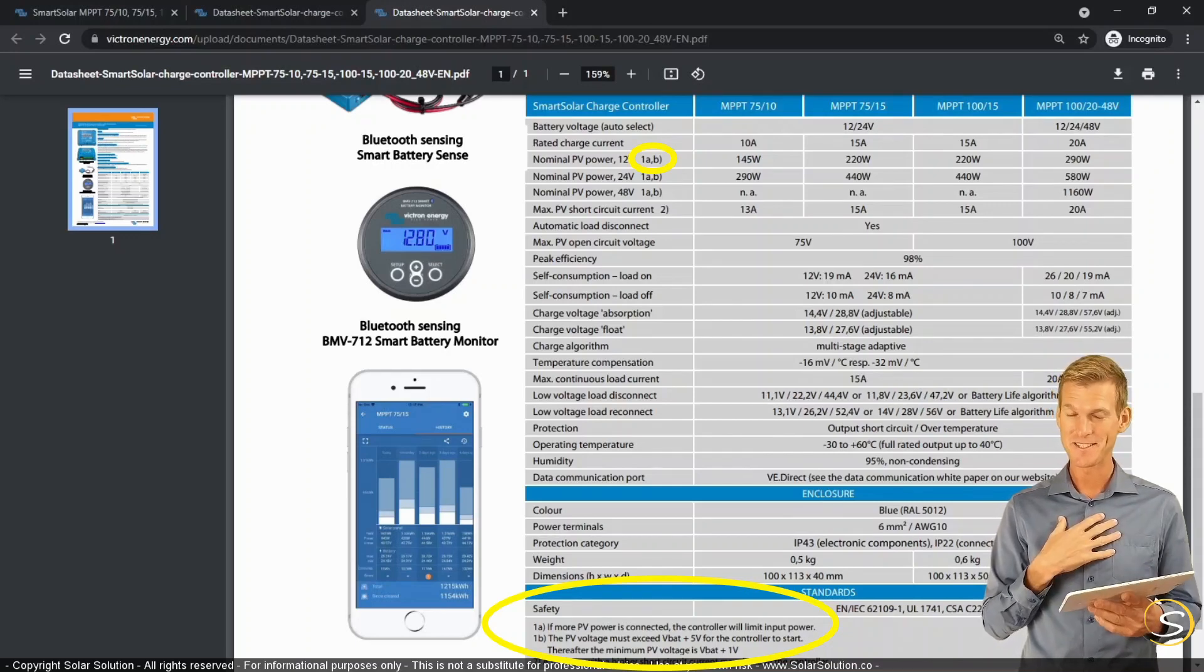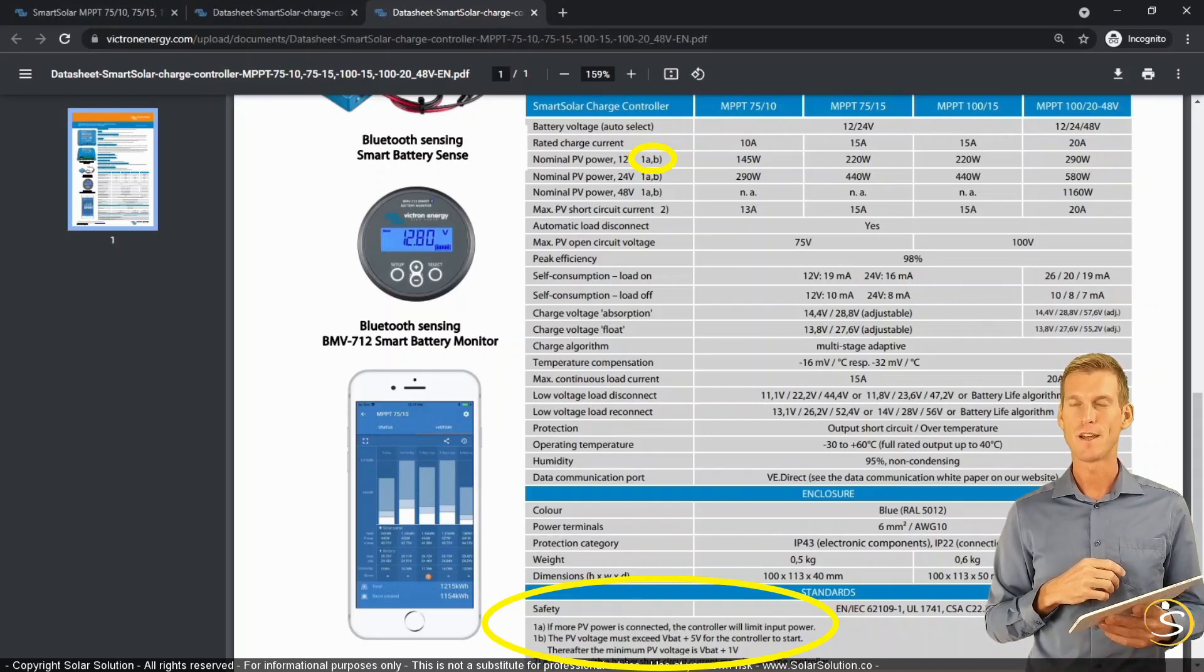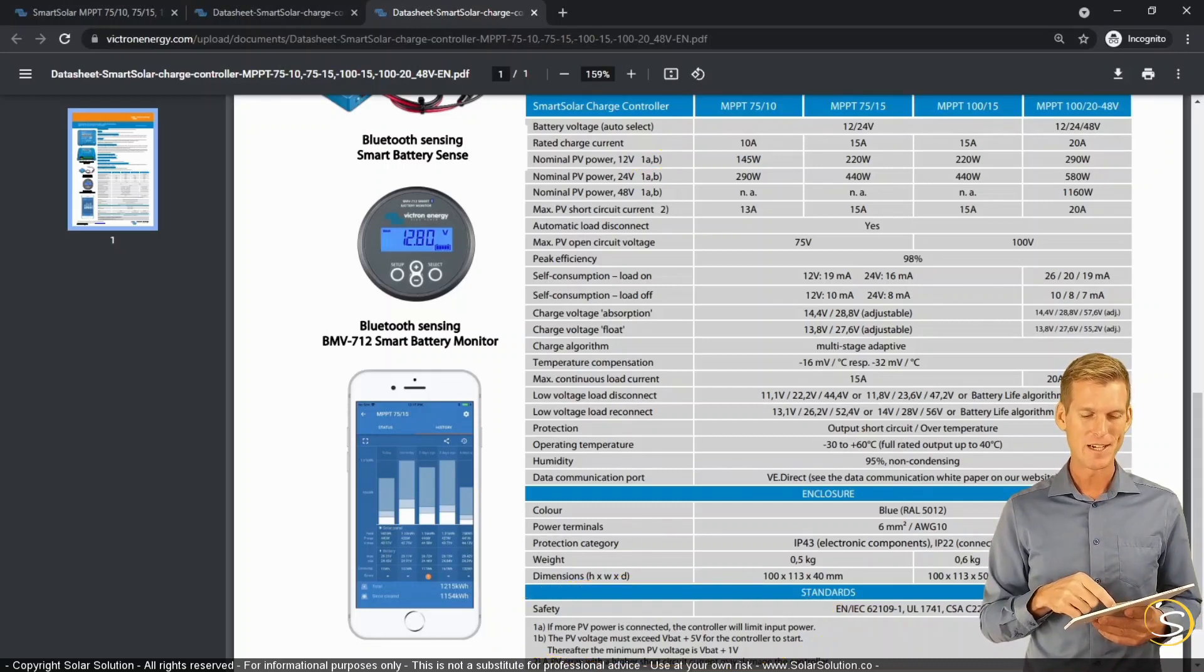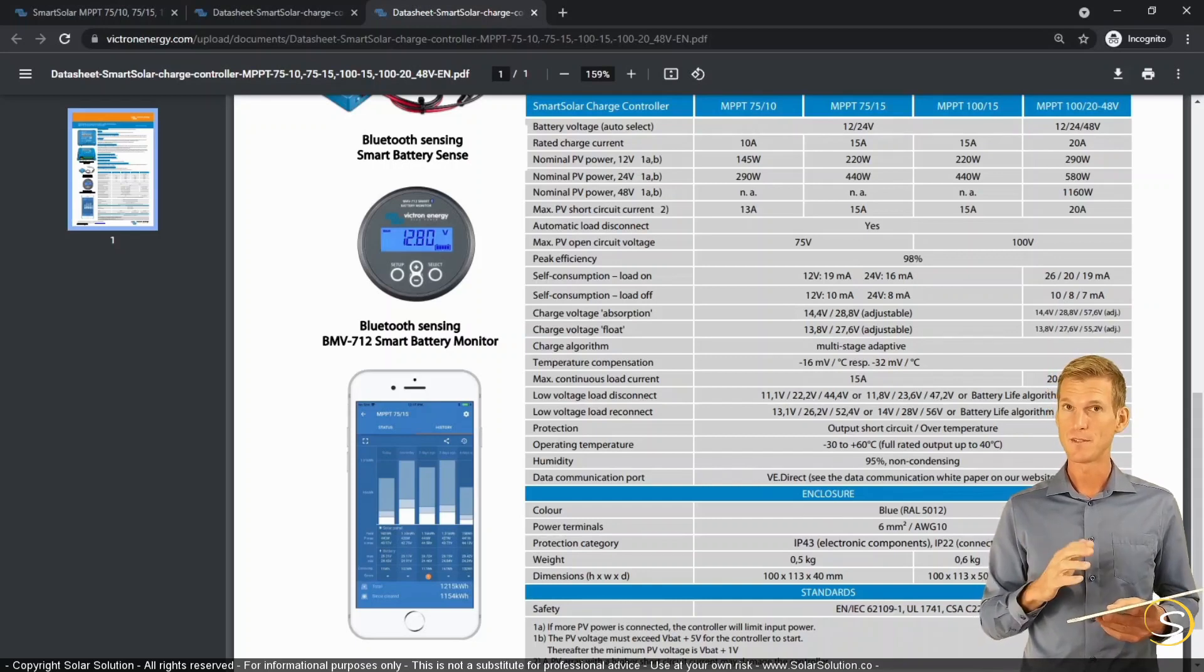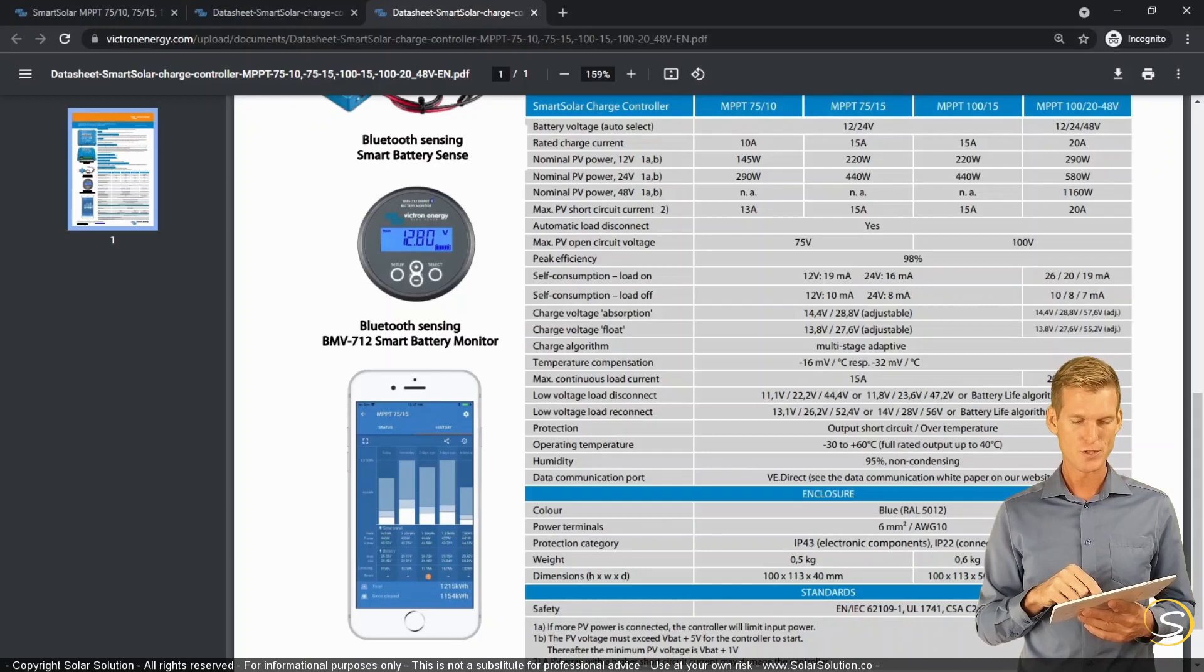You can, my interpretation is, Victron doesn't say it, but my interpretation is that you can connect more than 145 watts. Now, it is very likely that there's a limit to it. Victron doesn't say it, so that would be a nice question for Victron. What is the maximum amount of solar power that you can connect to the solar charge controller?